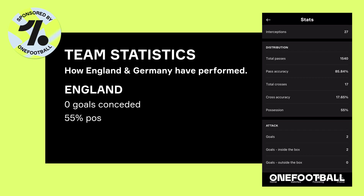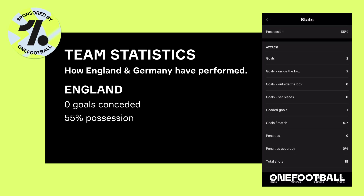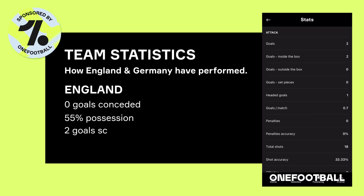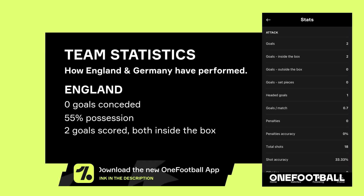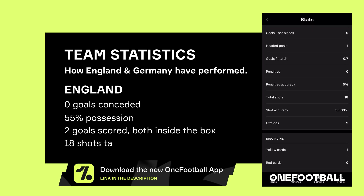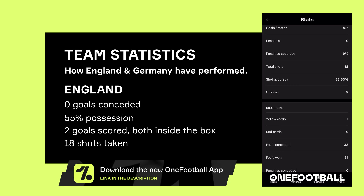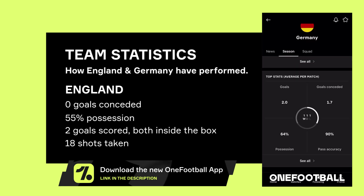England averaged 55% possession in their group matches, but I expect this to be lower against Germany. Two goals have been scored and both of them have been inside the box, and overall England have had 18 shots in their three matches.